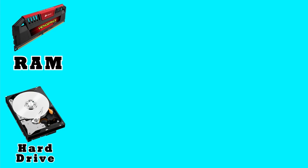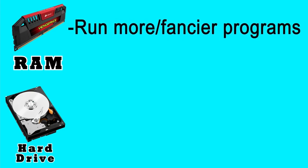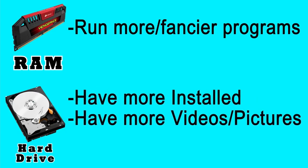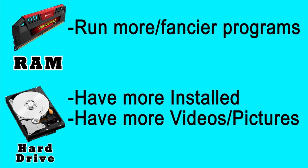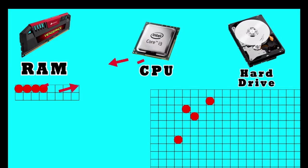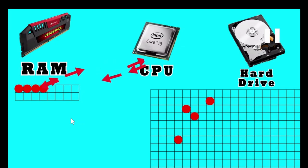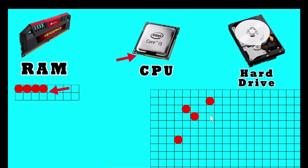From a user's perspective: RAM allows you to run intensive programs, while disk space allows you to have more programs installed and more data they reference. You have to understand that when your CPU is processing, it loads every piece of information from the hard drive to the RAM and communicates with the RAM. The CPU does not do its processing with the hard drive directly — it loads what it needs onto the RAM.